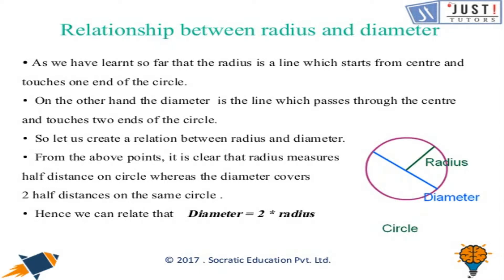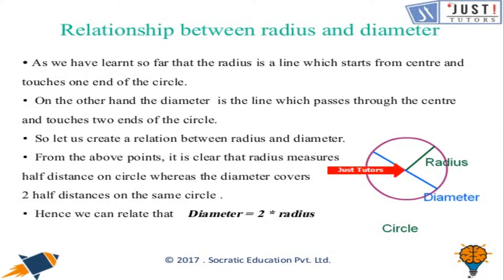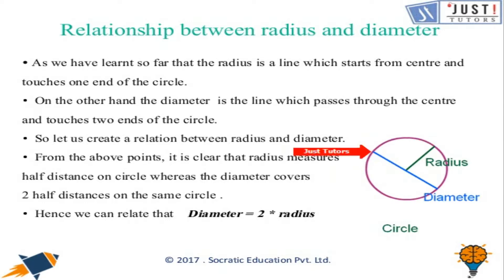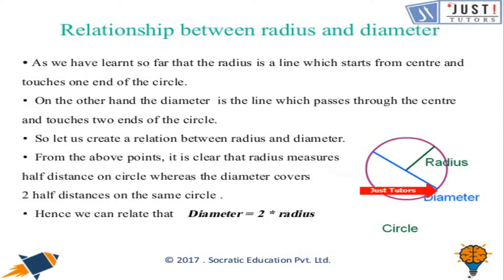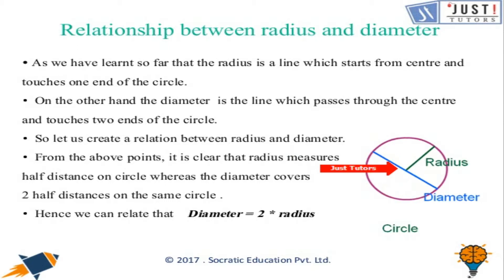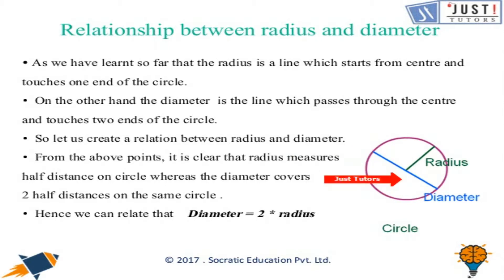Now let's see what is the relationship between the radius and the diameter. The radius is the line which starts from the center and joins the circle at one end. The diameter is a line which starts from one end, passes through the center, and joins at the other end. So we can say that the diameter is twice the radius. If we add two radii, we get the diameter.